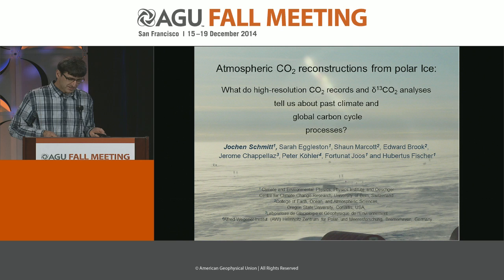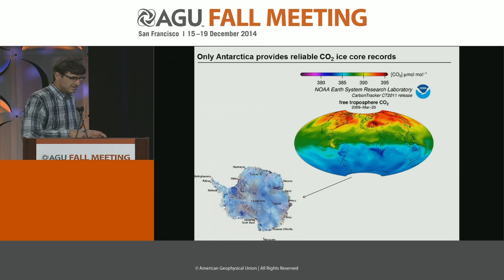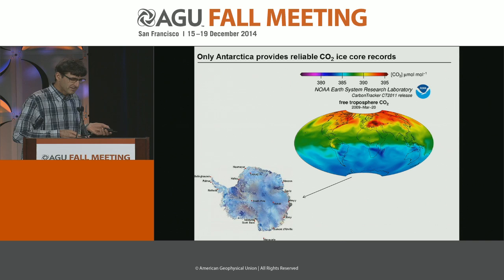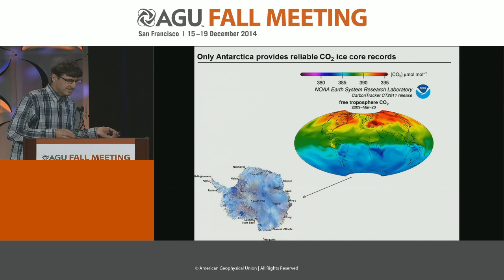This talk is about ice cores, CO2 measurements, and stable carbon isotope measurements. As you saw from the previous four talks, we know much about the CO2 concentration of the current carbon cycle in very high temporal and geographical resolution, although it's difficult to solve all these questions. From the past, we only have reliable CO2 concentration measurements from Antarctica — basically a single point, because only ice from Antarctica is clean enough for this purpose.